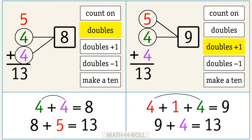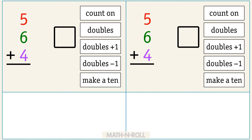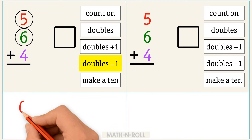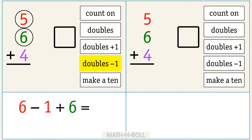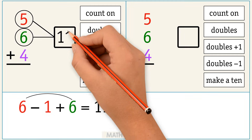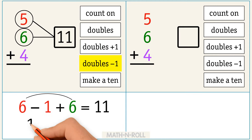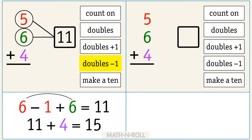We solved this problem using two different strategies but the result was the same. Let's try another one. 5 plus 6 plus 4. Circle 5 and 6. We can use the doubles minus 1 strategy. Rewrite 5 as 6 minus 1. Then add 6. 6 and 6 are doubles. We know that 6 plus 6 equals 12. 12 minus 1 equals 11. Then add 4 to 11 to get 15.